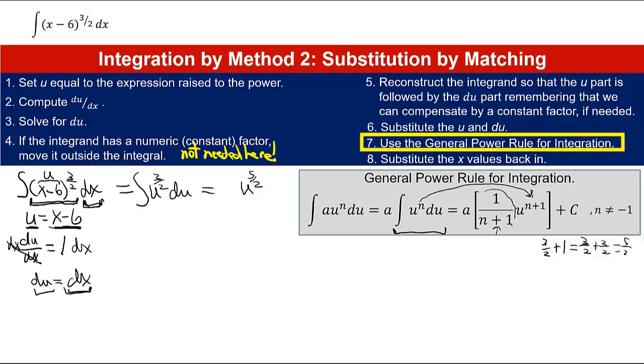Now out front, you have 1 over that power. Well, the power is 5/2, so you have 1 over 5/2, and I could write it as 1 over 5/2 and then simplify it. But 1 over a fraction is just the reciprocal of the fraction, so it's easier just to go ahead and invert it before you even write it down. So this 1 over 5/2 becomes 2/5. And of course, for all our indefinite integrals, you have a constant of integration, plus c.